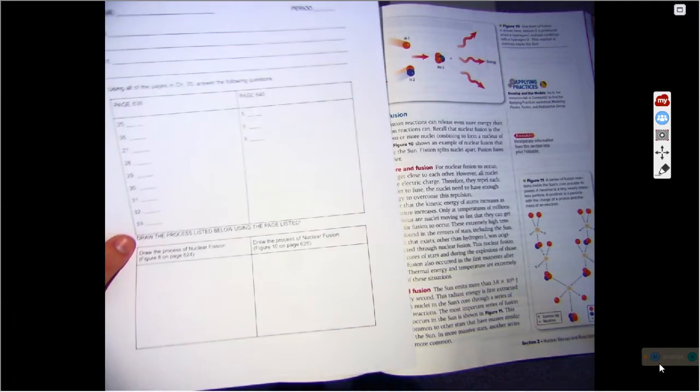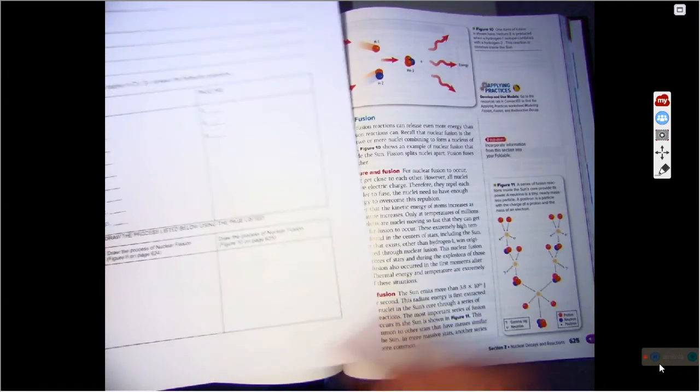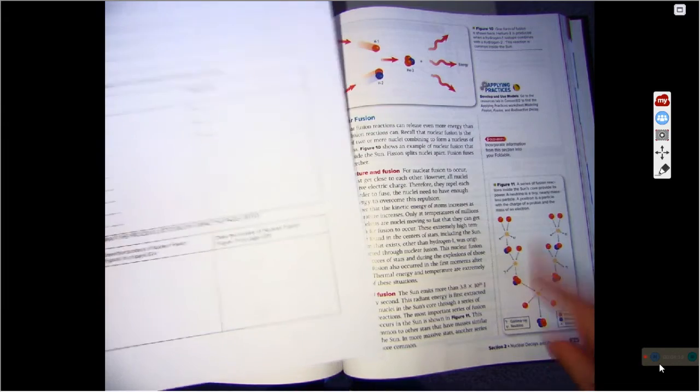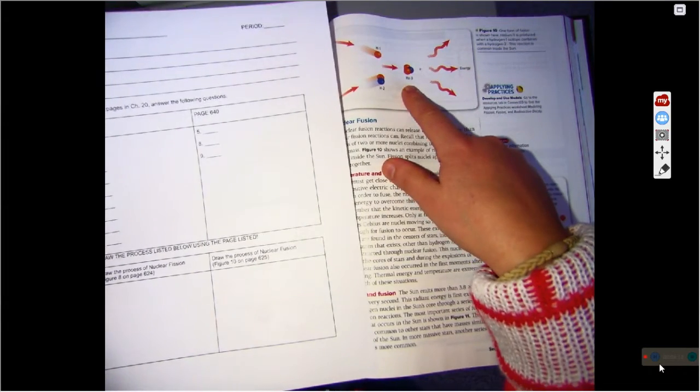Then I said to draw a nuclear fusion, which is on page 625, the next page. And I said it needs to be figure 10. This is figure 11. Don't draw that one. Figure 10 is right here.